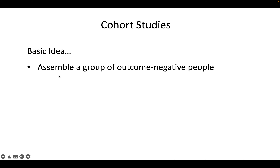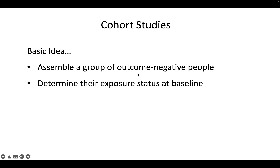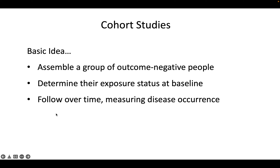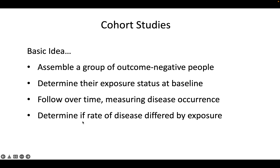The basic idea is you assemble a group of outcome-negative people — people that don't have the disease yet. You determine their exposure status at baseline and put them into an exposure-positive and exposure-negative cohort. You follow them over time, measuring disease periodically or at the end, and figure out if the rate of disease differs depending on exposure.